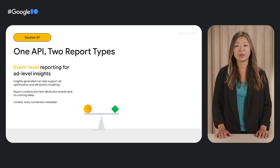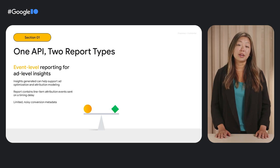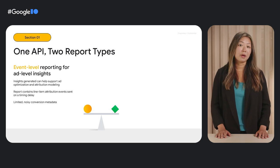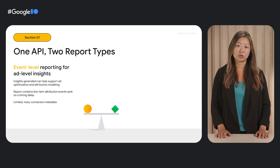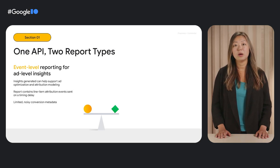Diving into the two different report types in more detail, event level reporting will likely be used for insights that relate to ad optimization and attribution modeling. Event reports provide high fidelity line item data on the ad event that happened. This is paired with limited noisy data about the conversion. Additionally, event reports are sent on a timing delay to further prevent the ability to use them to identify the user. For example, the ad tech could understand that a conversion was attributed to a specific ad impression, but would receive limited information on what that conversion represents.